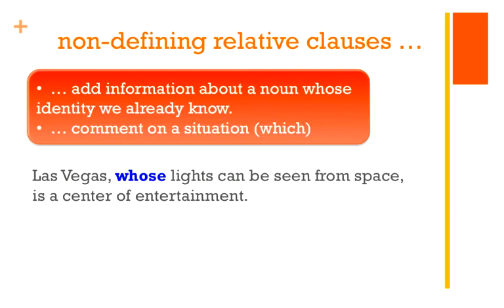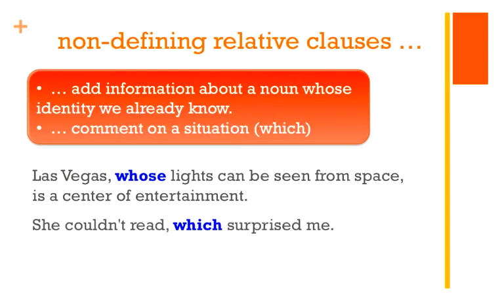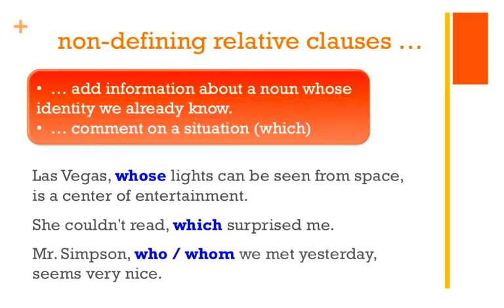The second definition: non-defining relative clauses can comment on a situation. This is the second 'which' that we had in part two. Here's your sentence: 'She couldn't read, which surprised me.' The 'which' here actually refers back to the whole sentence, 'she couldn't read.' So 'which surprised me' is a non-defining relative clause, and there is a comma in between the main clause and the relative clause.